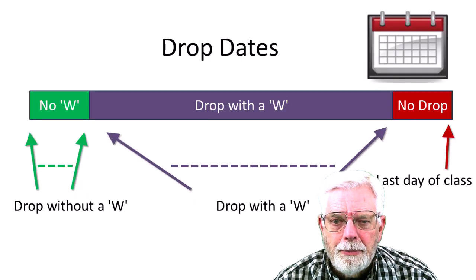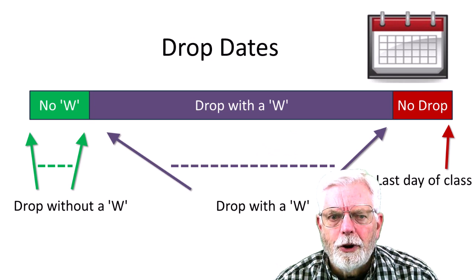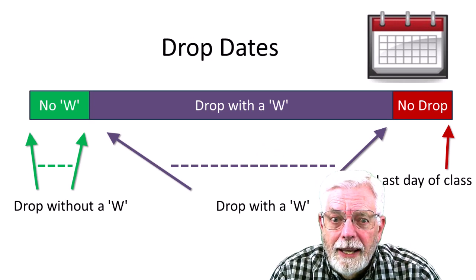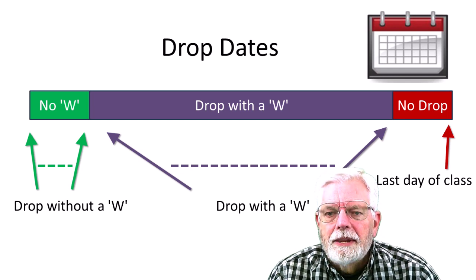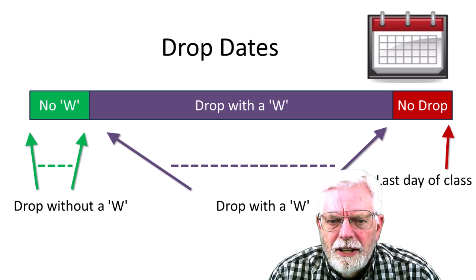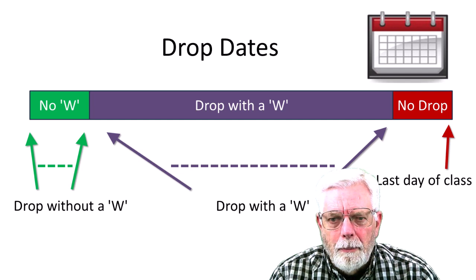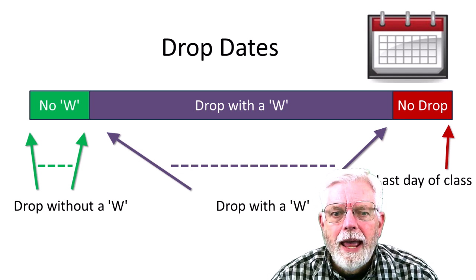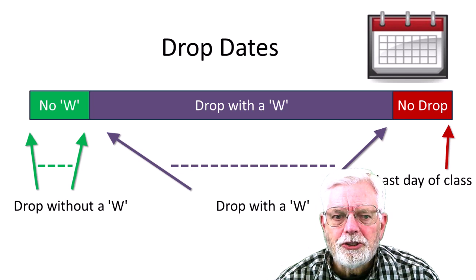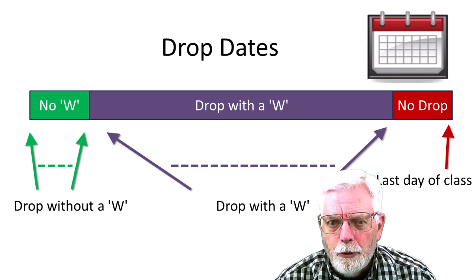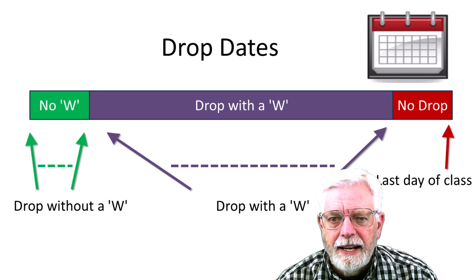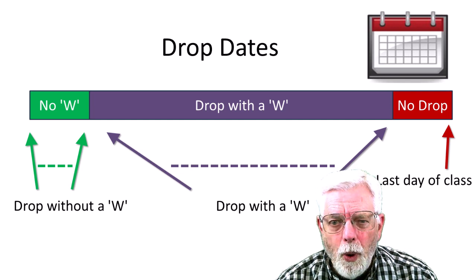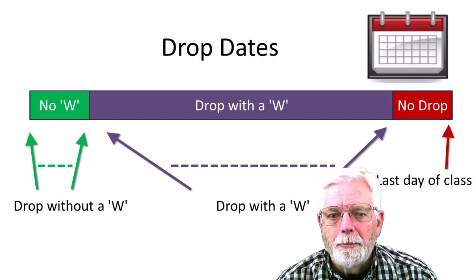Every class on campus has two important dates as far as dropping a class. You can drop near the beginning of a class and nothing will show up on your school records or transcript. The second date is near the end of the class. If you drop by that date, a W will show up on your records and transcript indicating that you signed up for a class and withdrew before it was completed. After that second date has passed, you are not permitted to withdraw, and an instructor is required to give a grade based on your completed work.